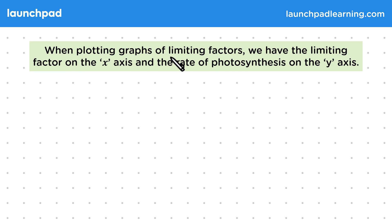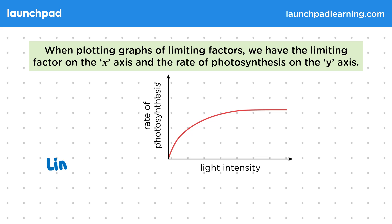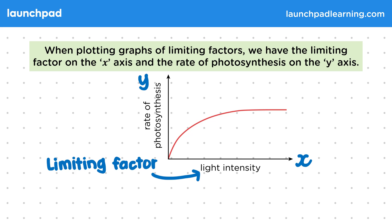When plotting graphs of limiting factors, we have the limiting factor on the x-axis and the rate of photosynthesis on the y-axis. For example, light intensity goes on the x-axis and the rate goes on the y-axis.